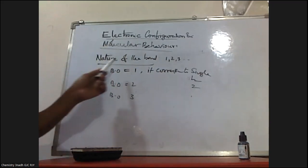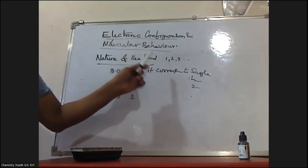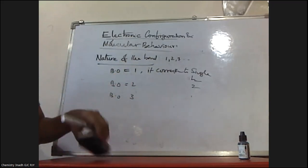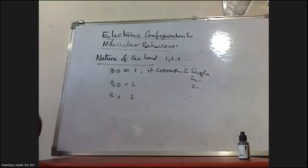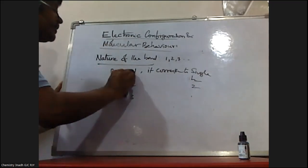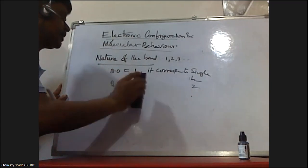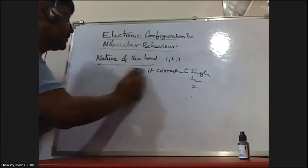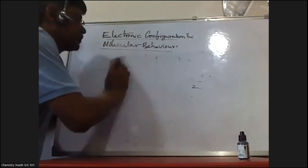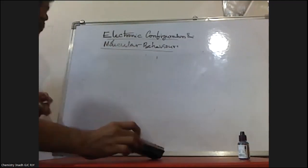This is the nature of the bond — whether a single bond, double bond, or triple bond is present. That is the information we are getting from bond order. Bond order 1 corresponds to single bond, bond order 2 corresponds to double bond, and bond order 3 corresponds to triple bond and so on.